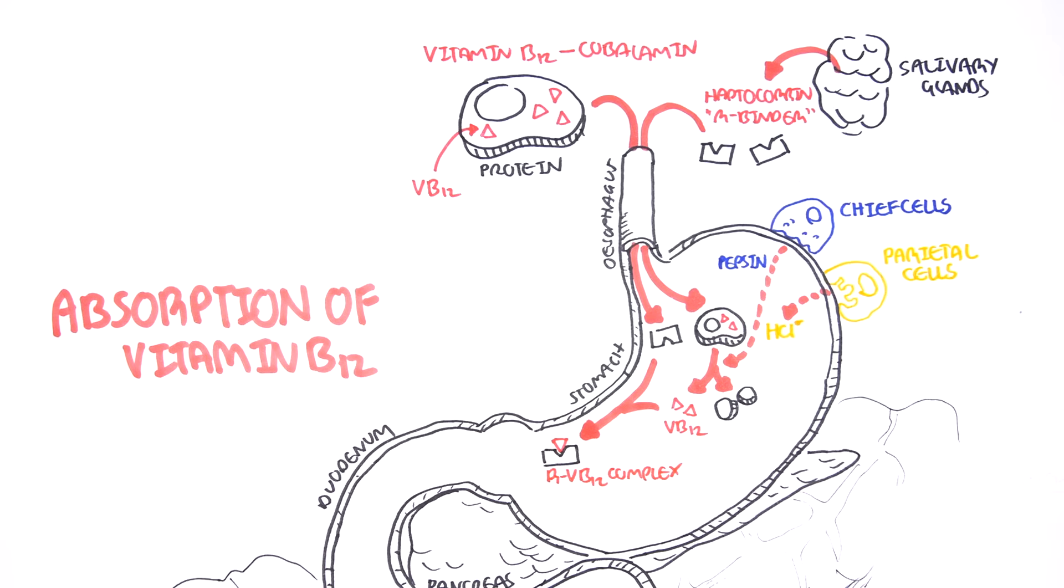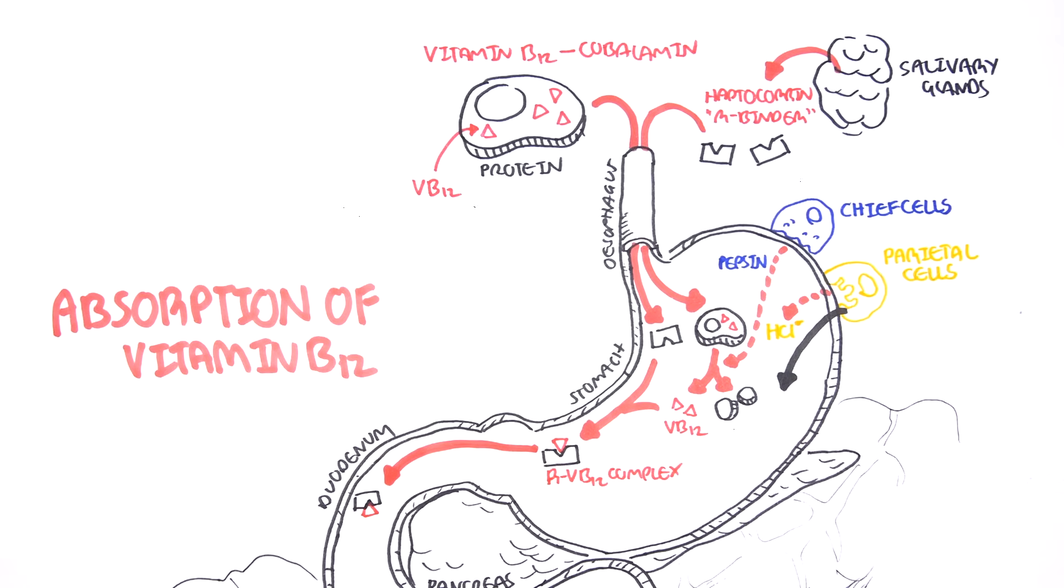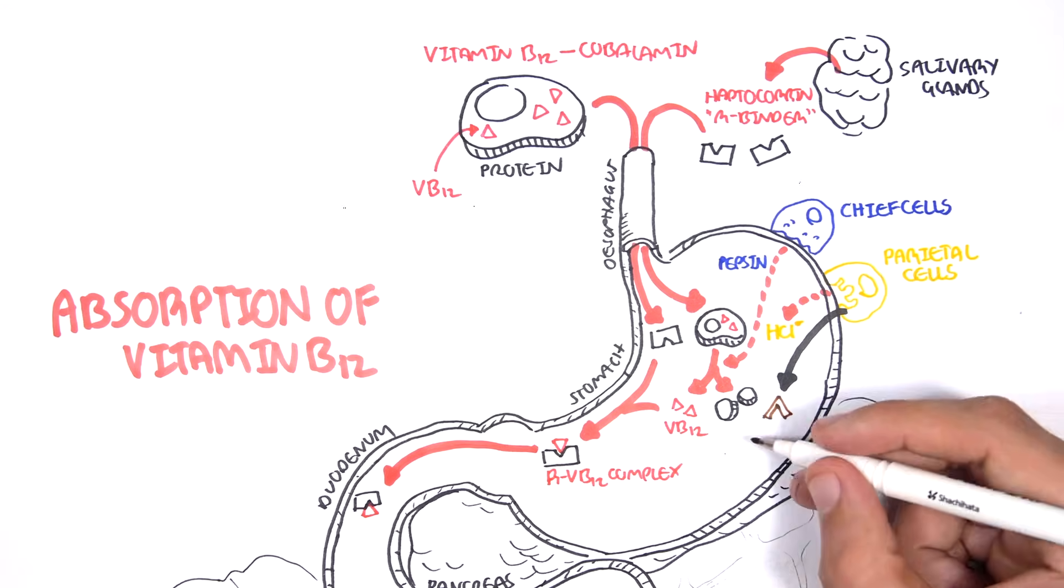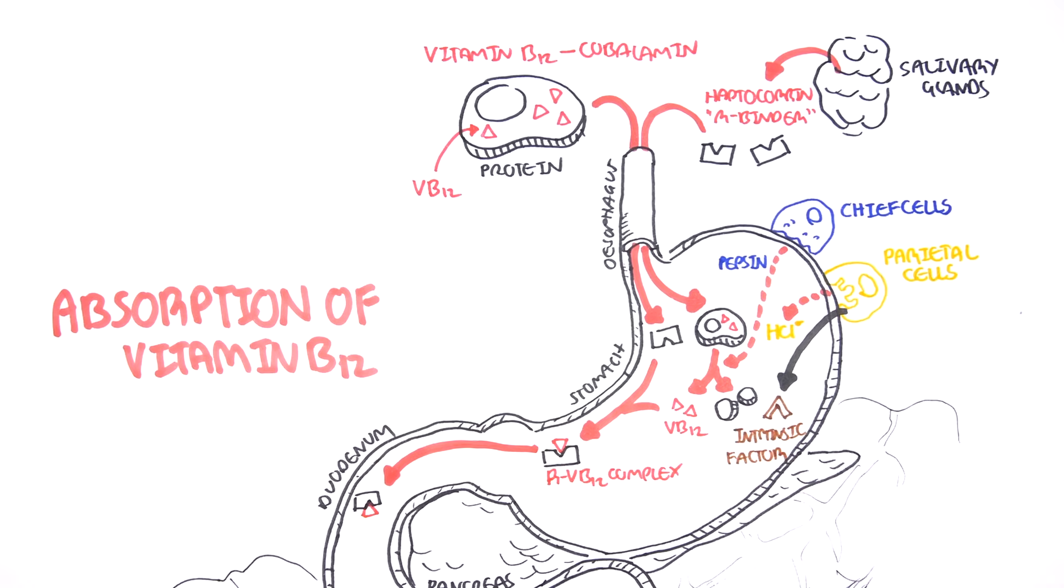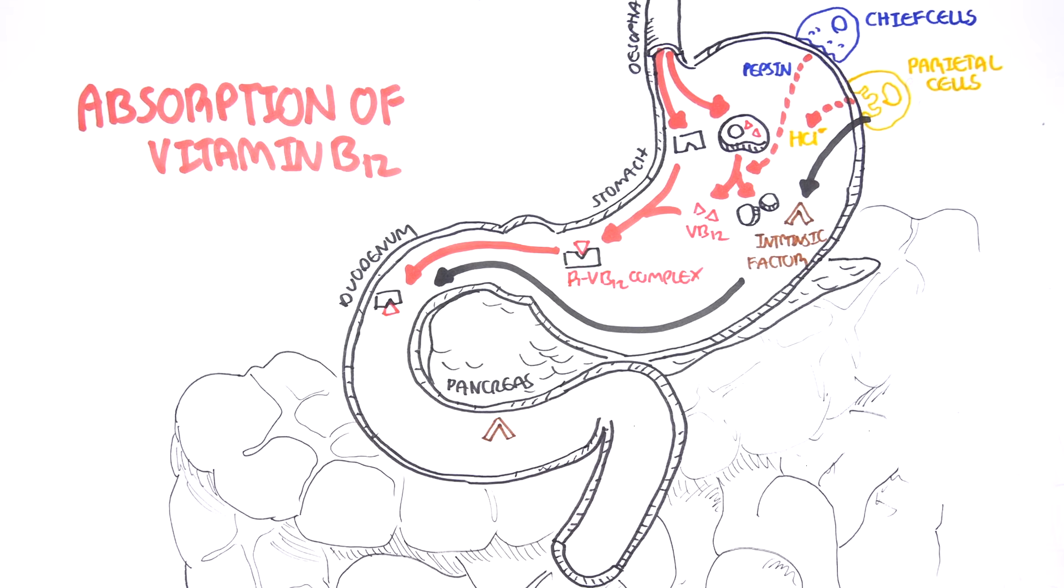And this complex then travels to the duodenum of the small intestine. Aside from producing hydrochloric acid, the parietal cells also secrete an important substance for vitamin B12 absorption. This molecule is intrinsic factor. The intrinsic factor released in the stomach will travel to the small intestine as well.